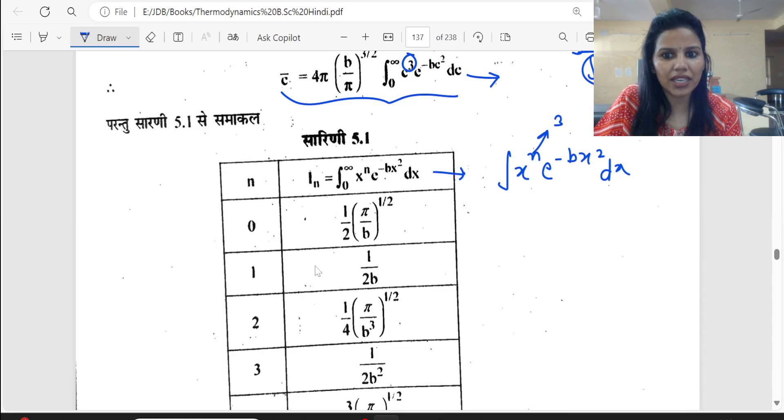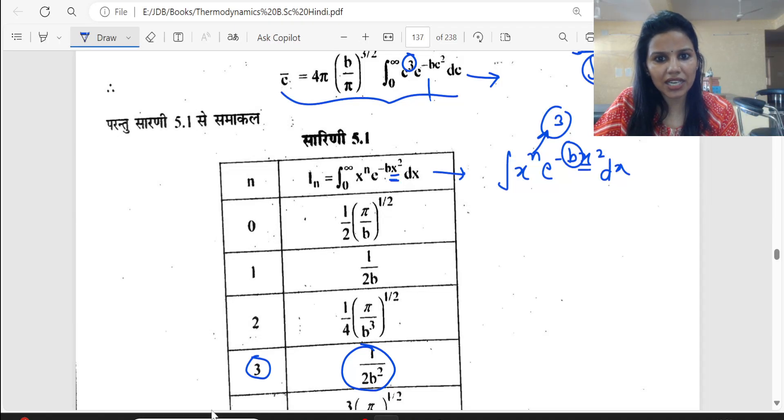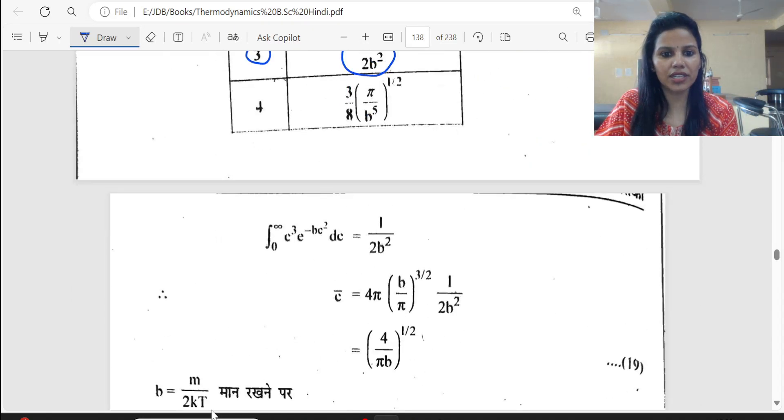What is n? n=3. What is b? The coefficient of x square. Here x square has b, so the integration will be 1 upon 2b square. We will solve this integration.